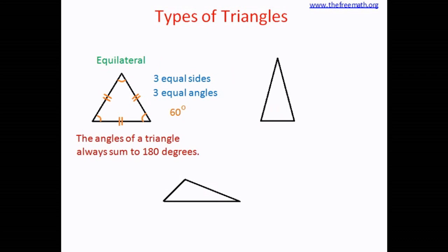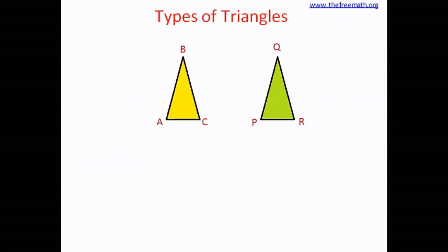Now let's look at the second triangle. You can see that it has two equal sides, and when two sides are equal there will be two equal angles. Such kind of triangle is called an isosceles triangle. You can verify this with a small experiment: draw an isosceles triangle, make sure that the two sides are exactly the same, and make two copies of such a triangle.